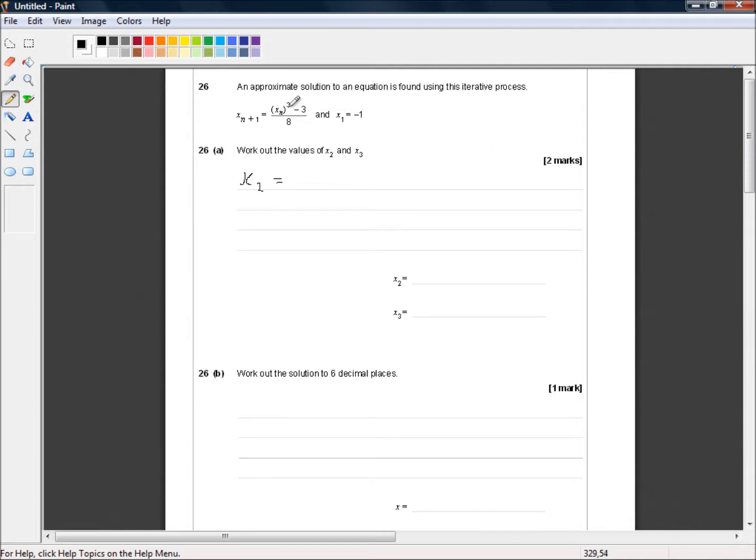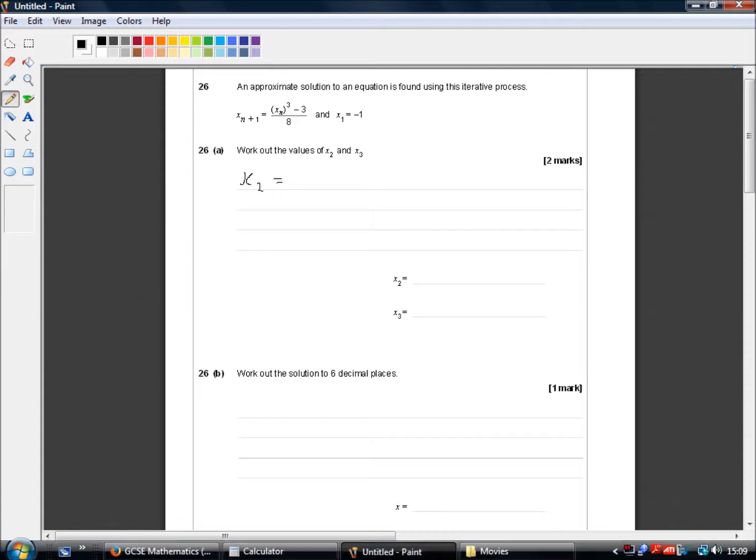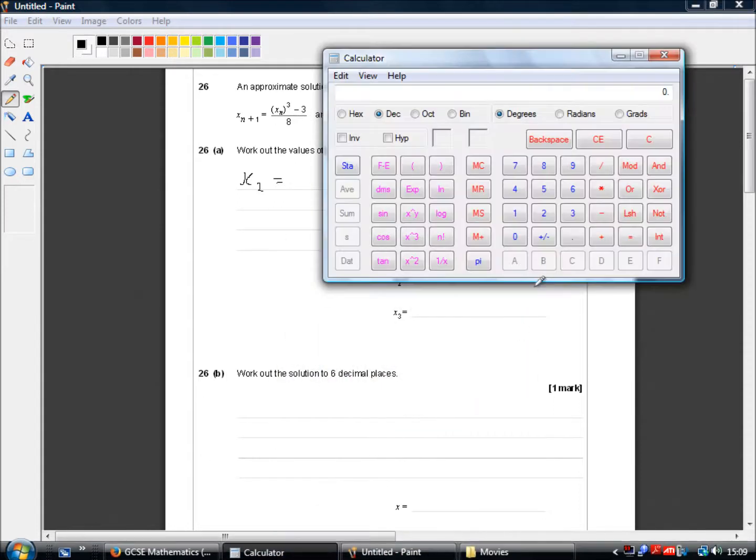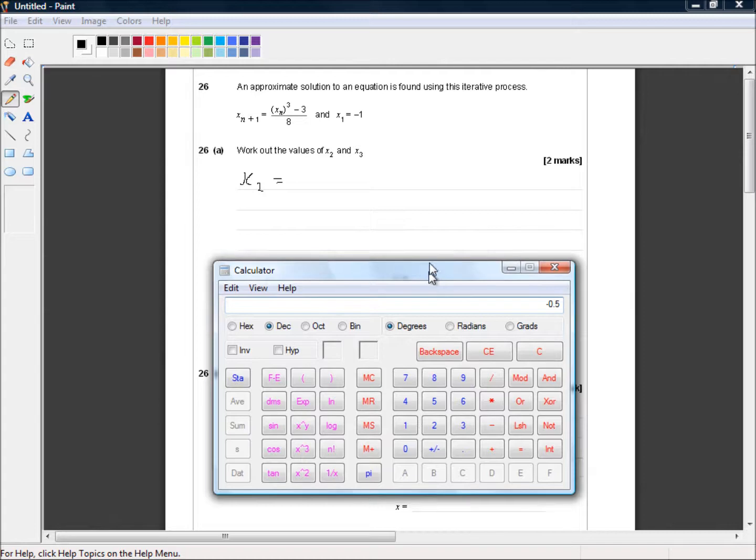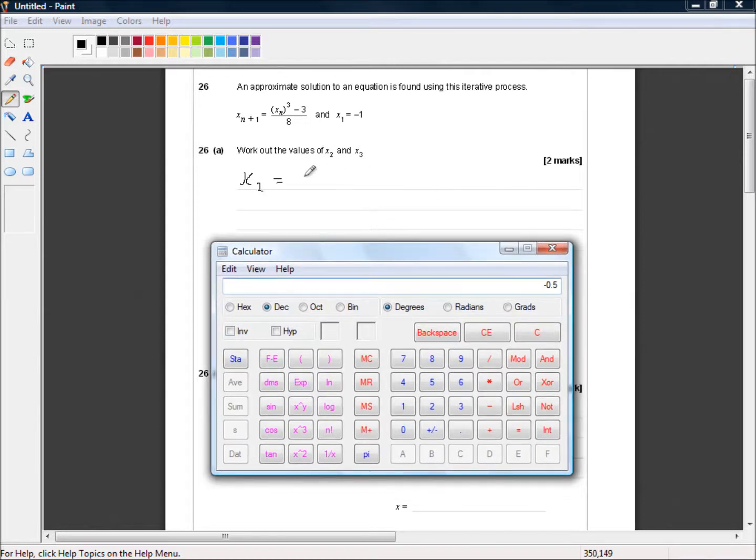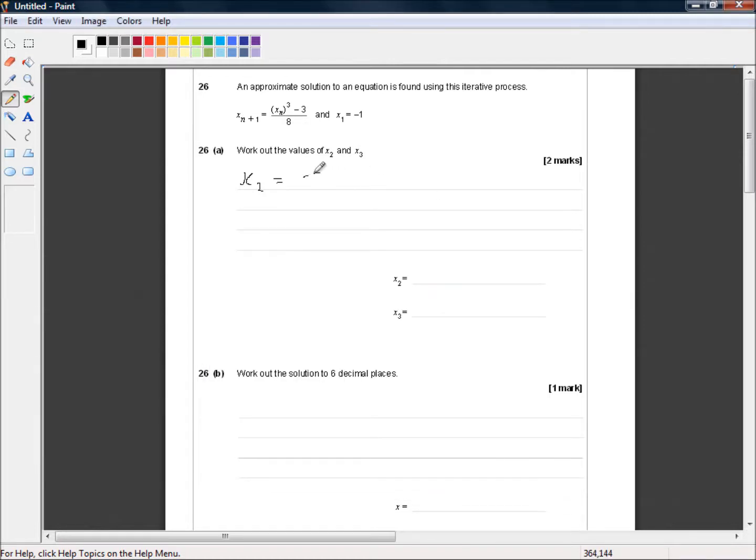So that's minus 1 cubed minus 3 divided by 8. We recall that we are allowed to use a calculator. So it's negative 1 cubed minus 3 equals, divided by 8 equals minus 0.5. You can be clever and say that's negative 1 half but you won't get any extra marks for saying so. So I'm just going to write what's in my calculator.